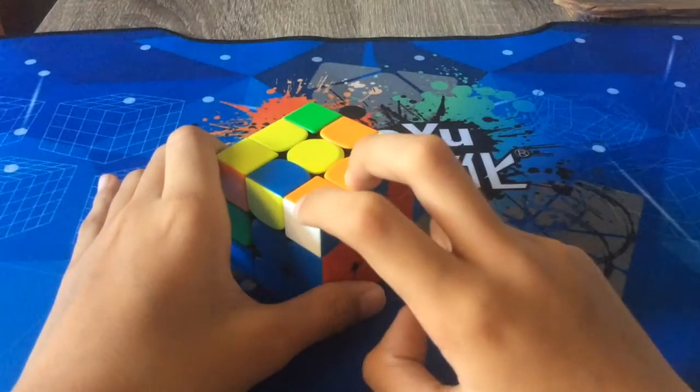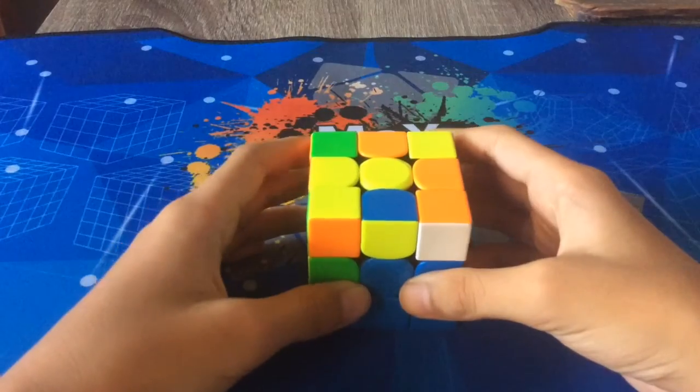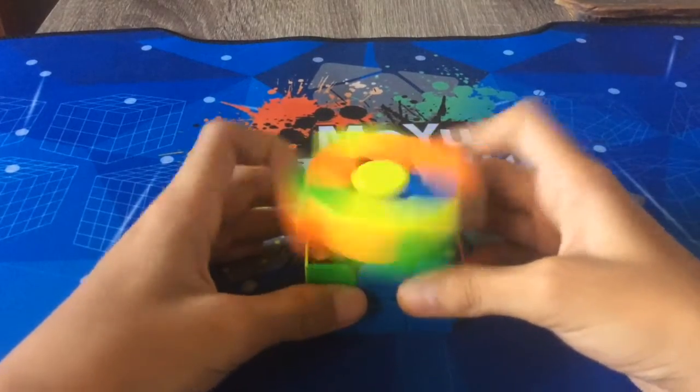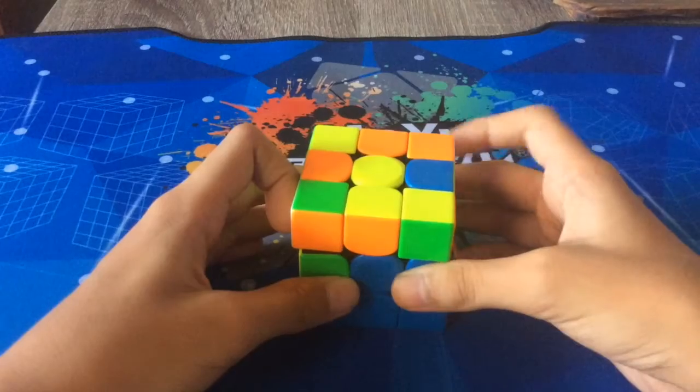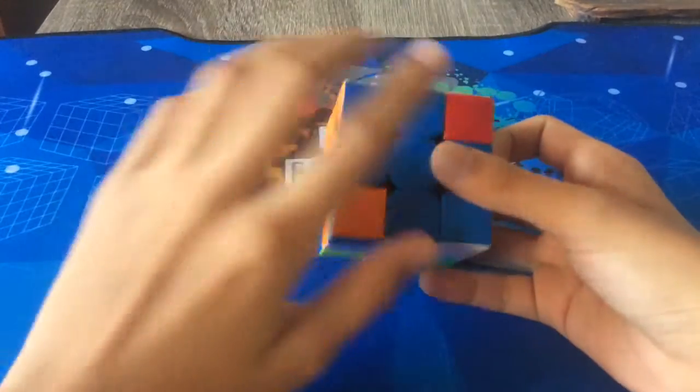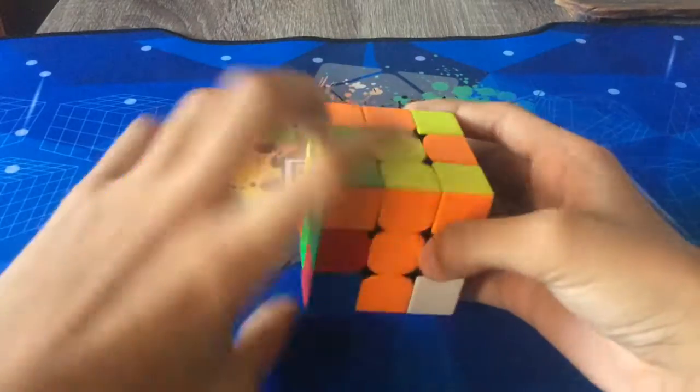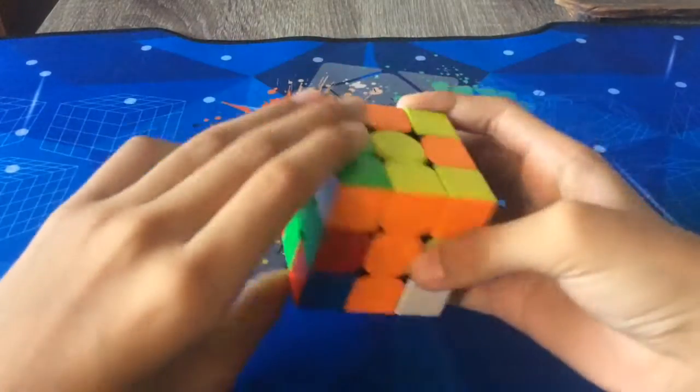For some reason this is not the second pair. We did U', U because he couldn't decide what to do. And then L', U, and then L' U L which sadly breaks up that pair. And then Y' to insert the white orange green pair.